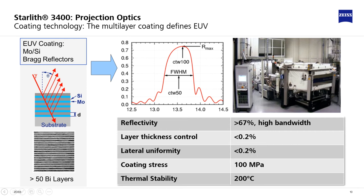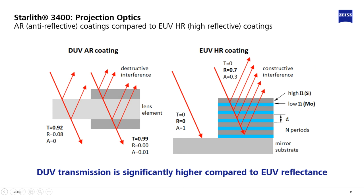Typical values for layer thickness control and lateral uniformity are below 0.2%. And the coating stress shall not be greater than 100 MPa. The coatings shall also work at temperatures up to 200 degrees Celsius.